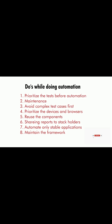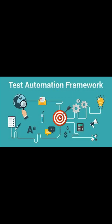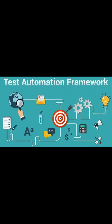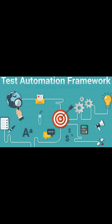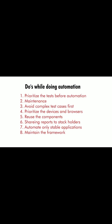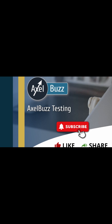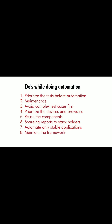Always try to automate a stable application. Don't automate an unstable application, as it may cause bugs in your automation. Always maintain the framework — like your form classes, your locators, and your track of locators. It is very important. Don't forget to subscribe to the channel.